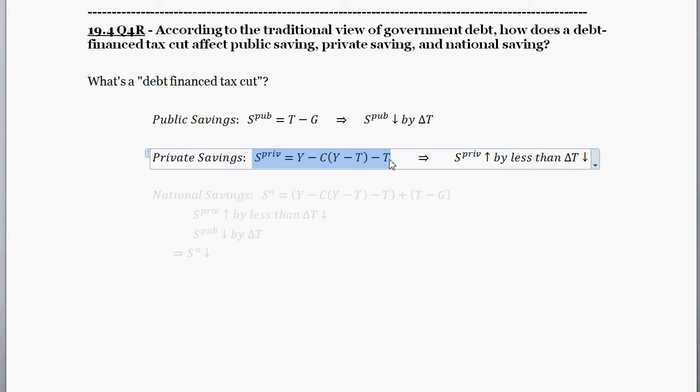For private savings, in the traditional view, a debt-financed tax cut will increase disposable income — that's the Y minus T term. Disposable income is increasing because taxes have gone down, and it thereby increases consumption. However, consumption will not increase as much as taxes decrease. This is because taxes change consumption by the marginal propensity to consume. If your taxes are cut, you don't consume all of it — you save a portion of that tax cut.